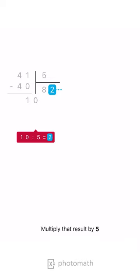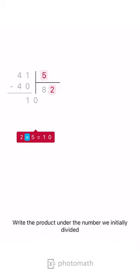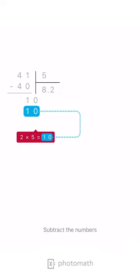Multiply that result by 5. Write the product under the number we initially divided. Subtract the numbers.